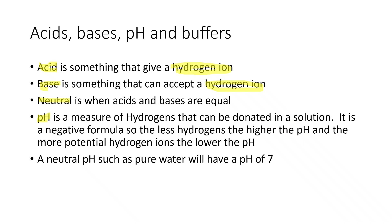If you have a basic solution, you have fewer hydrogens and a higher pH. A neutral pH — like pure water — is 7. Below 7 is considered an acid; above 7 is considered a base.